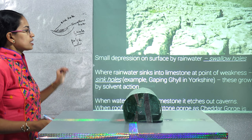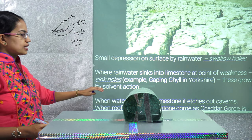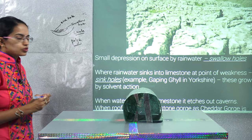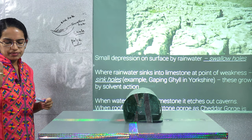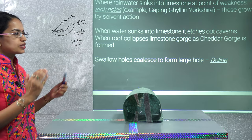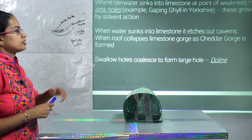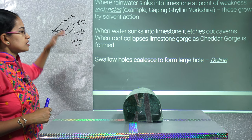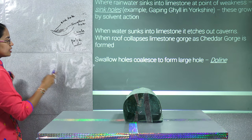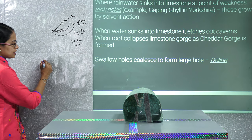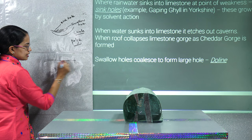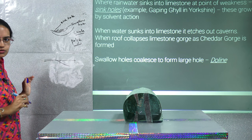An example of a sinkhole is Gaping Gill in Yorkshire, formed mainly by solvent action — calcium carbonate reacting with water. When the rooftop of a cave collapses, a gorge is formed. The river flowing on the surface suddenly disappears into the underground topography.